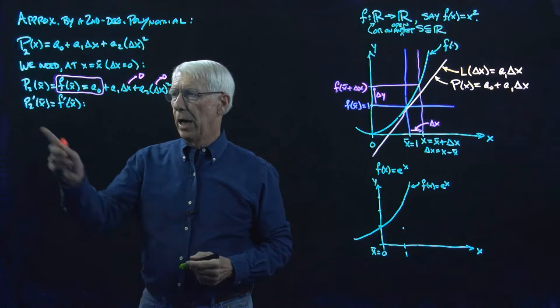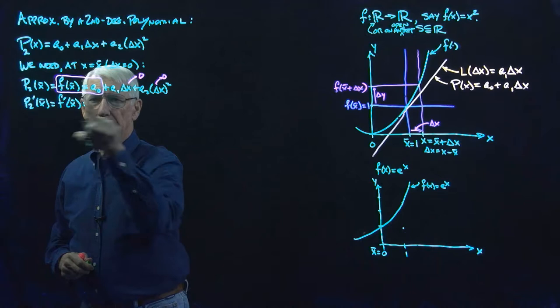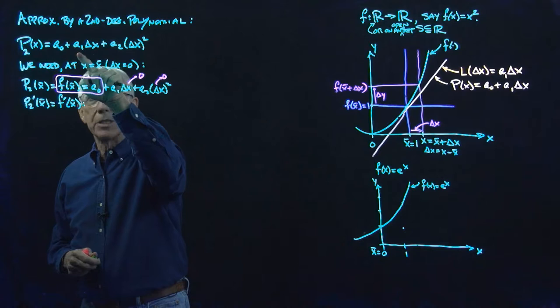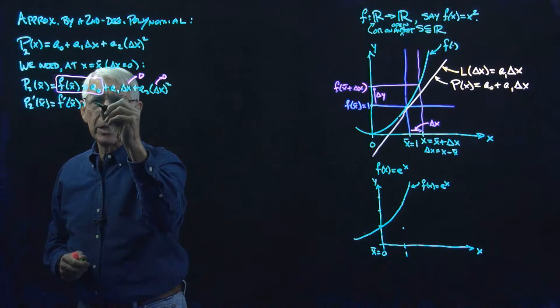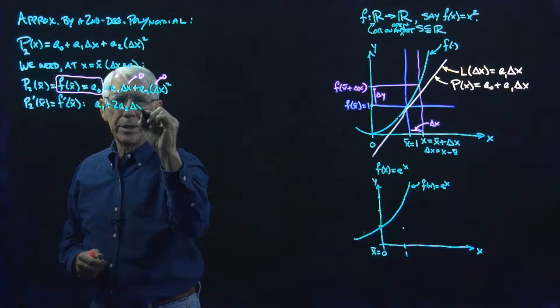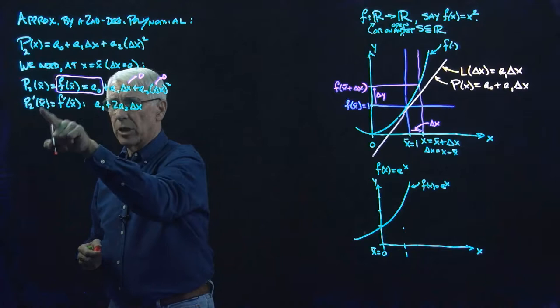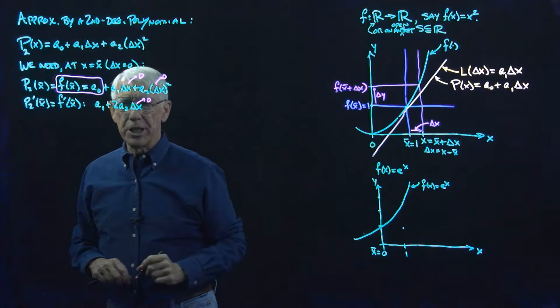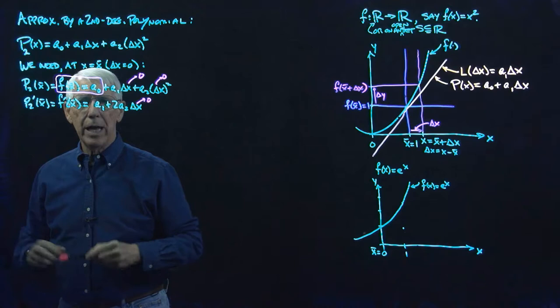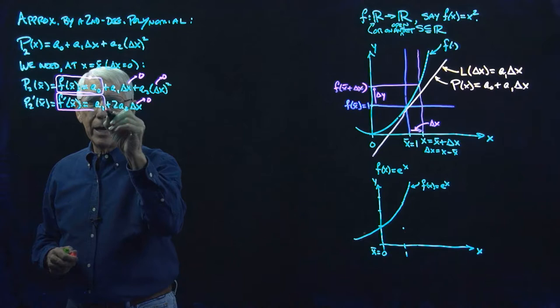What's the derivative of the p2 polynomial? The derivative of p2 is a1 plus 2a2 times delta x. We're looking at where delta x is zero, because we're evaluating at x-bar, so that term drops out. That means we need f-prime to equal a1, just as before.